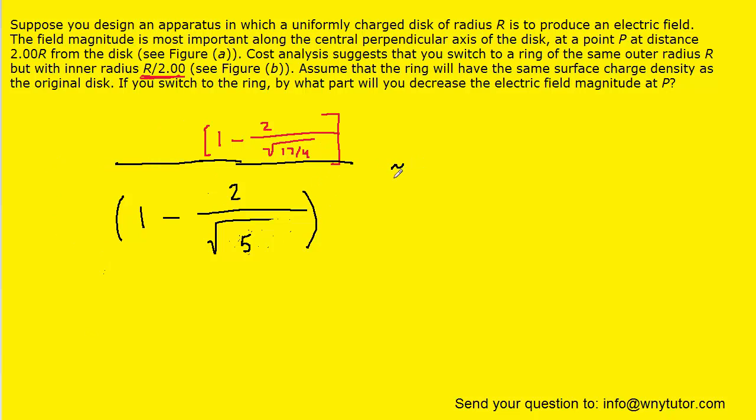And when you punch that into your calculators you should get roughly .283 and as a percentage that would be 28.3%. So either one of these answers would be correct. In other words we lose 28.3% of the electric field when we make the switch from disk A to disk B.